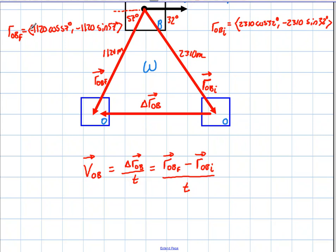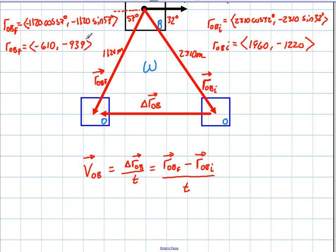For the final position, both components are negative: the x-component is negative 1120 cosine 57 degrees, and the y-component is negative 1120 sine 57 degrees. This is just unit vector notation for each position. Now all I have to do is subtract these two sets of components — final x minus initial x, and final y minus initial y.